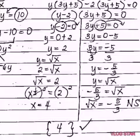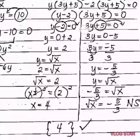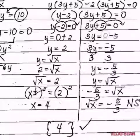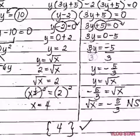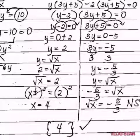Equate each factor with zero. So y minus 2 equals 0 and 3y plus 5 equals 0. Transposing negative 2, y equals 2. Transposing positive 5 gives 3y equals negative 5. Dividing both sides by 3, y equals negative 5 over 3.